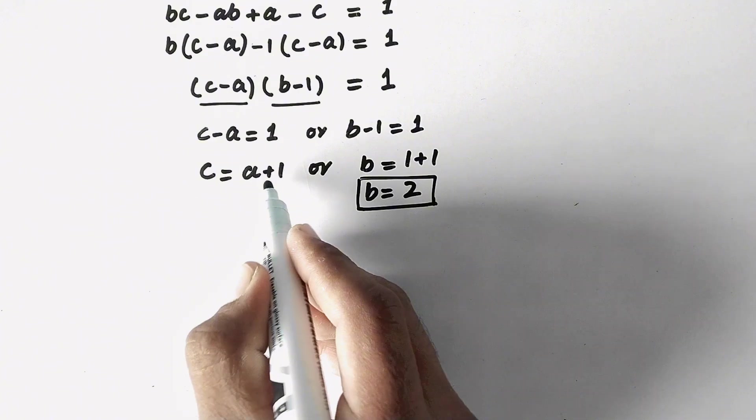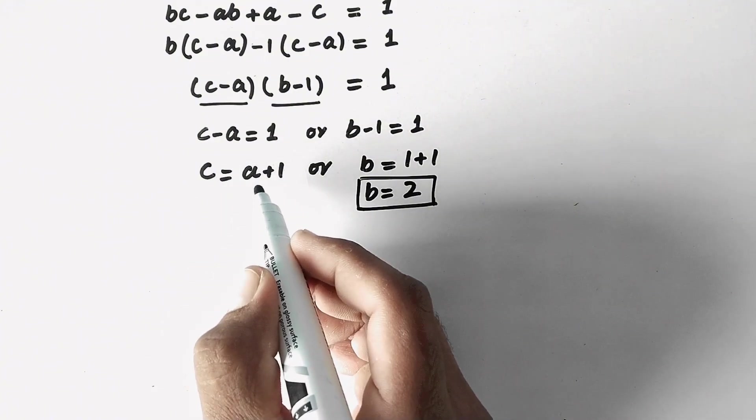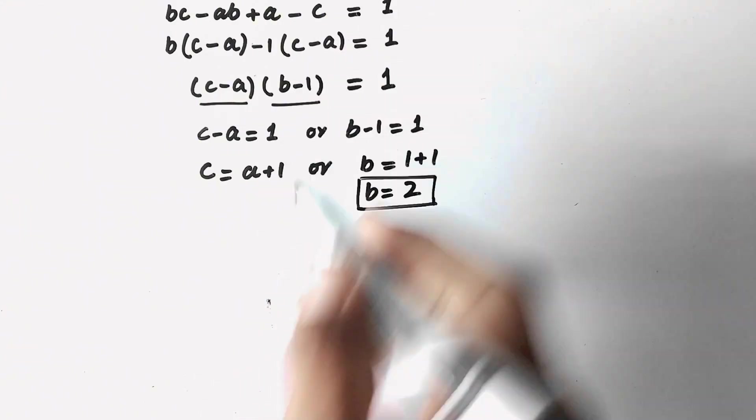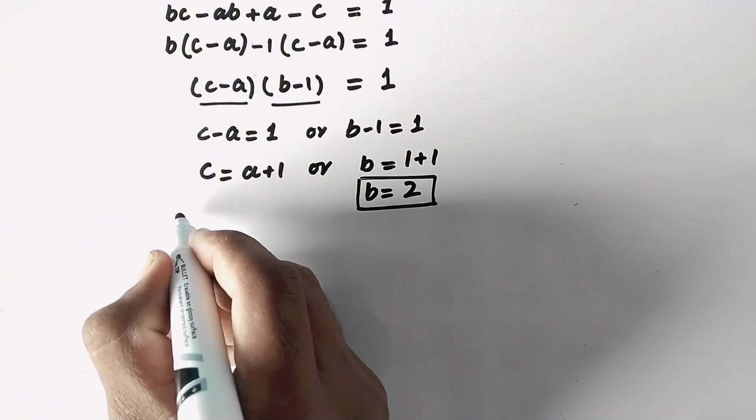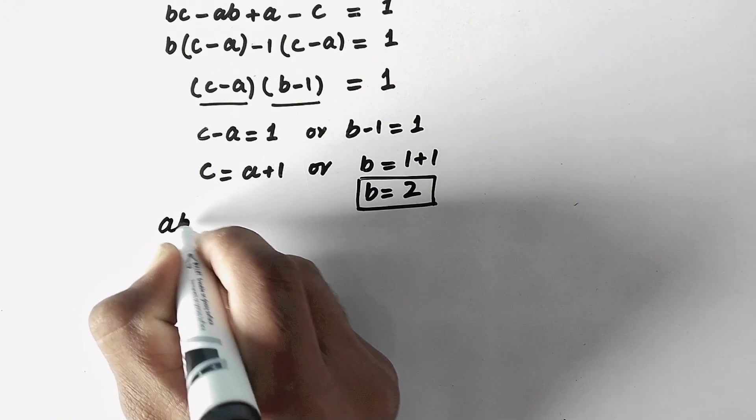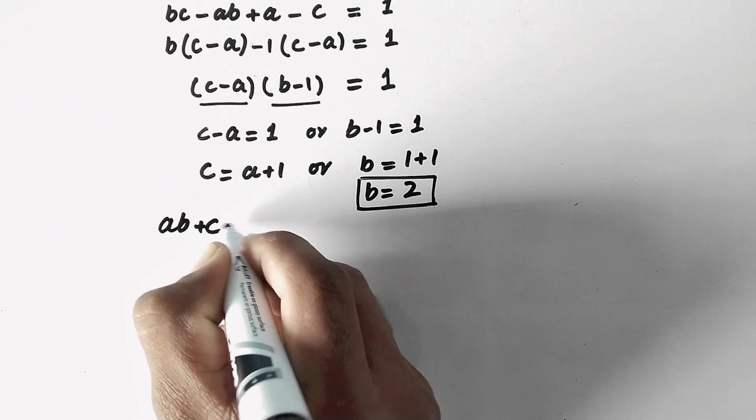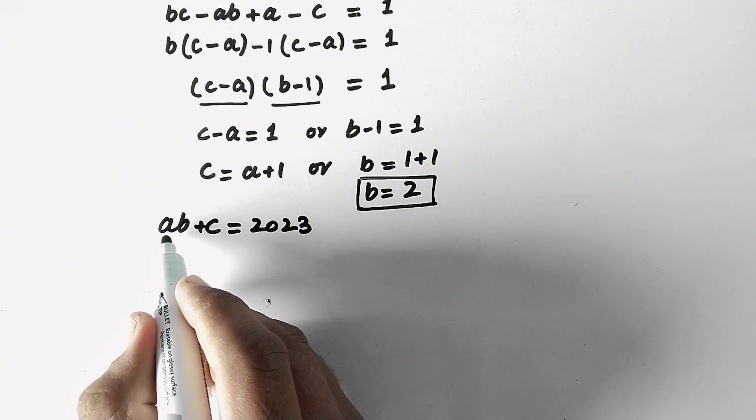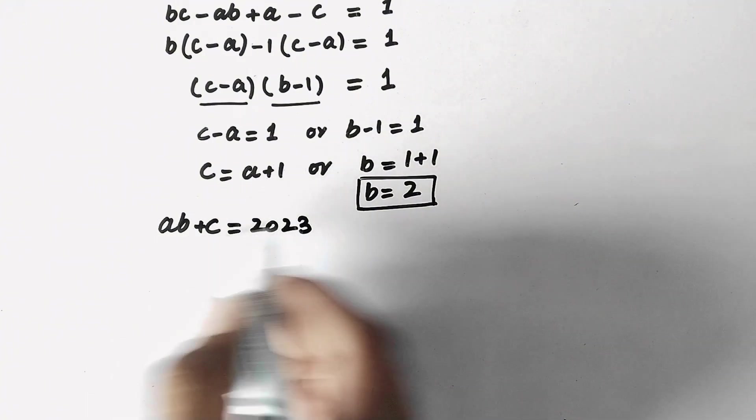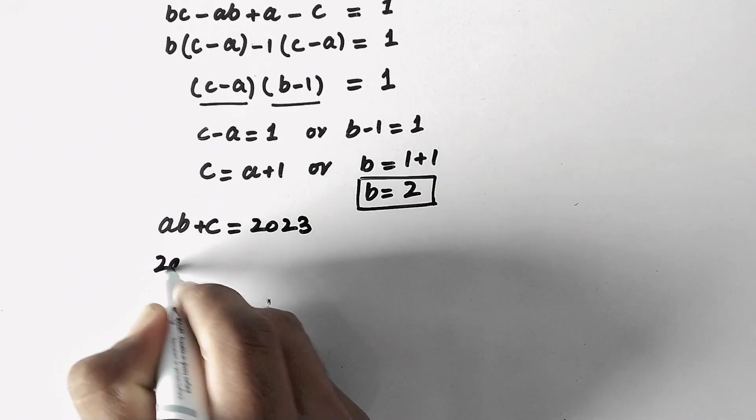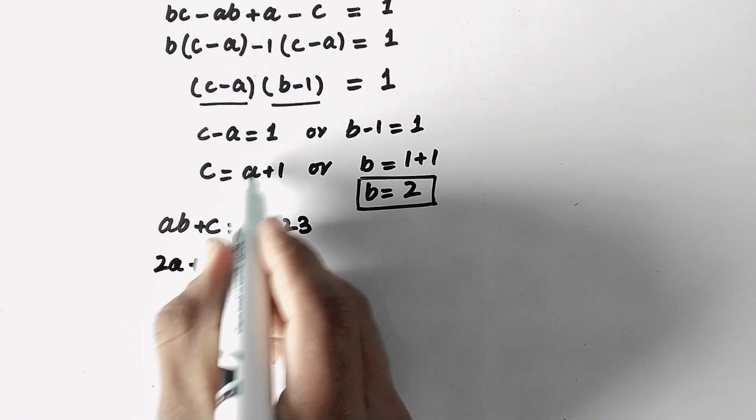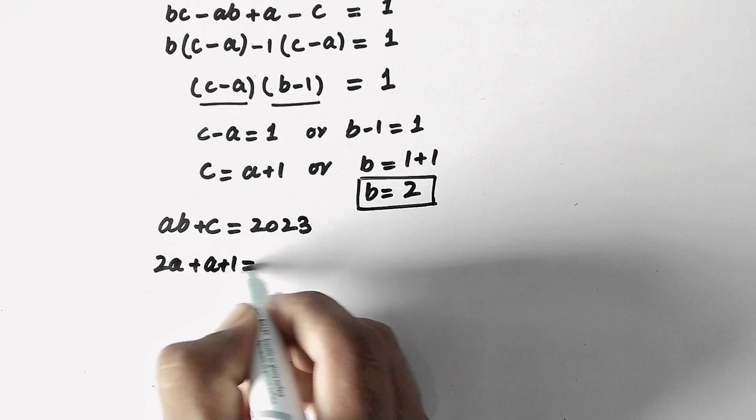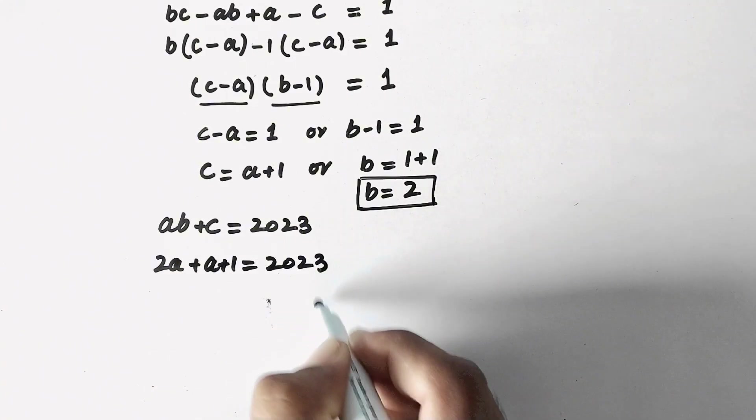And to get the value of C and A, we will put this equation in our original equation like equation 2. Then our equation 2 is AB plus C equals 2023. And here the value of B is 2, so here it will be 2A plus C, and C equals A plus 1, equals 2023.